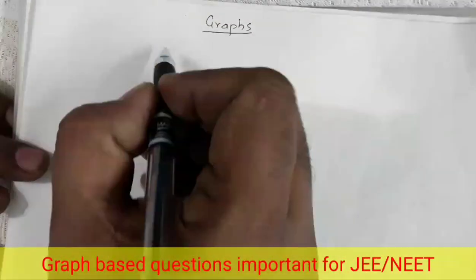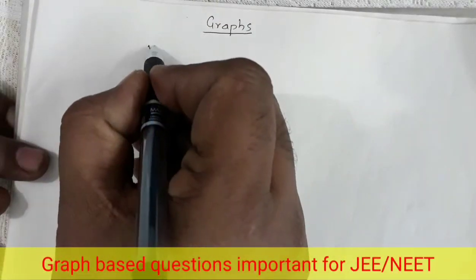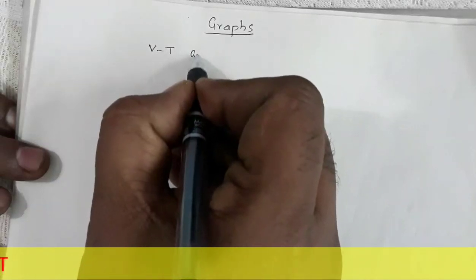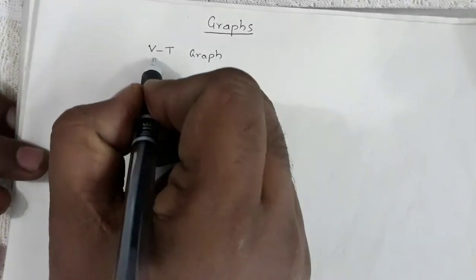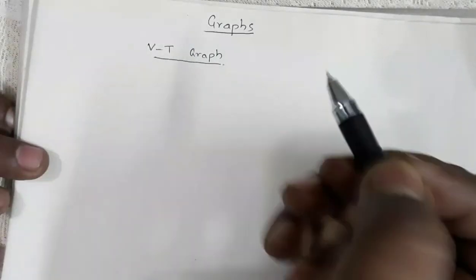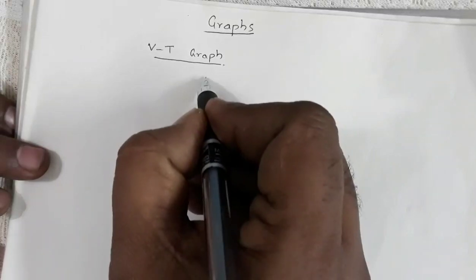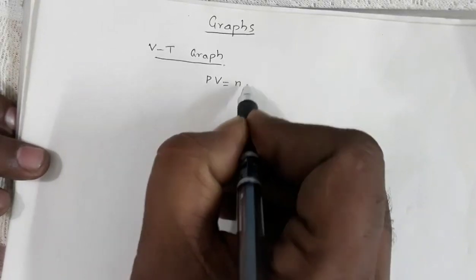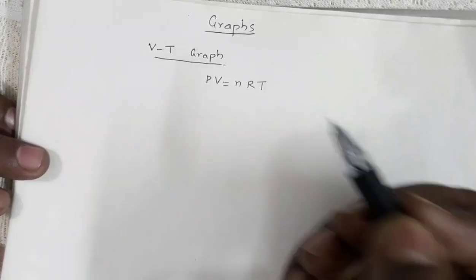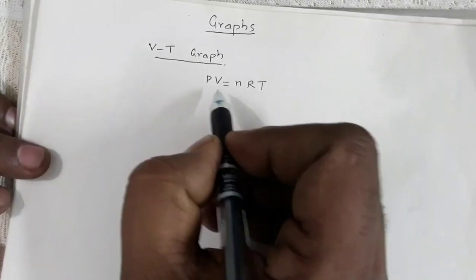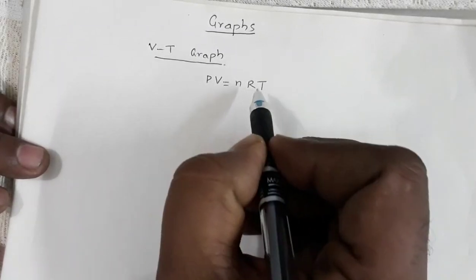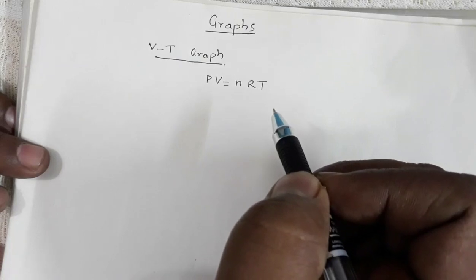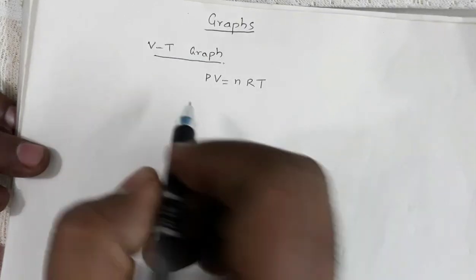The first graph we are going to see is the VT graph — the volume-temperature graph. We have the ideal gas equation PV = nRT, where P is the pressure, V is the volume, N is the number of moles, R is the universal gas constant, and T is the temperature.